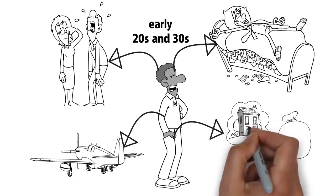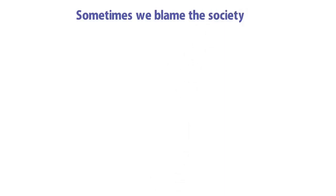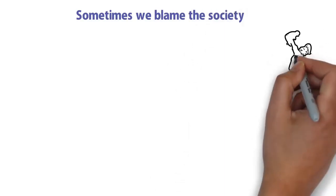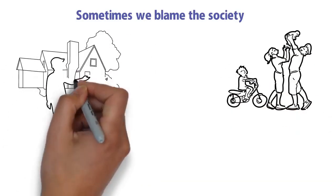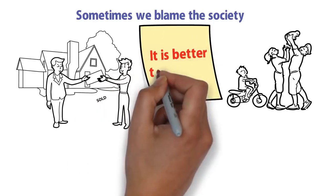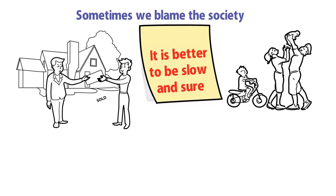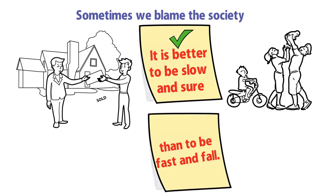That is why you are doing what you are doing. Sometimes we blame the society, but in that same society some people are managing their life. In that same society some people are managing and taking their life one day at a time. It is better to be slow and sure than to be fast and fall.